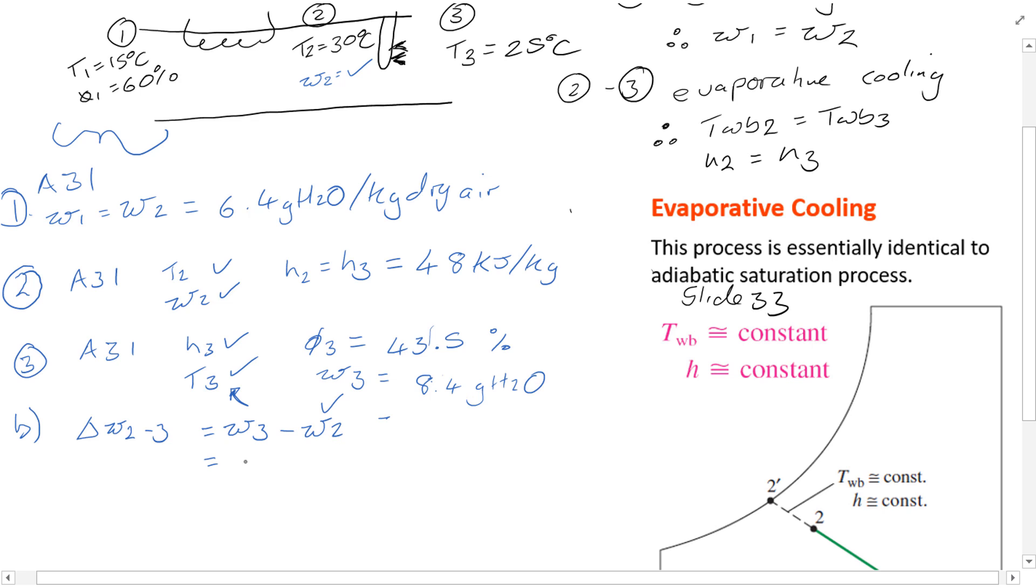Then simply this equation works out to be 8.4 minus 6.4, and divide all of this by 1000 to give us the value in kilograms. The answer you get is 0.002 kilograms H2O per kg dry air.